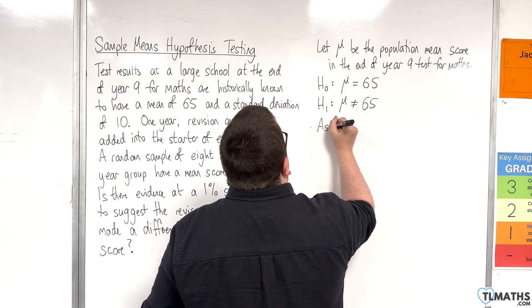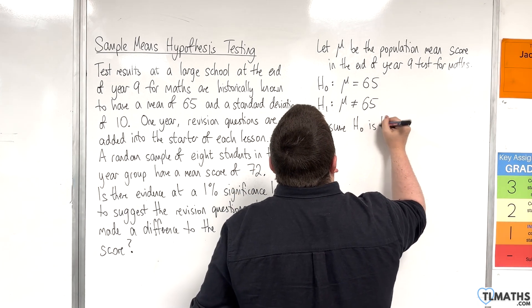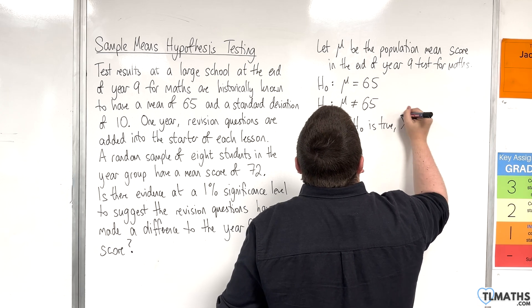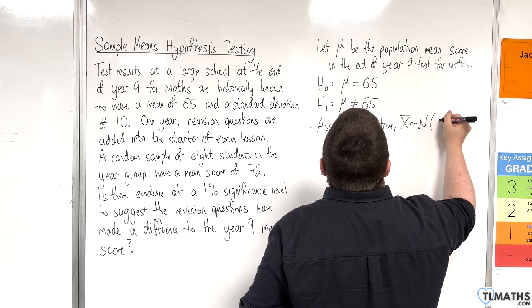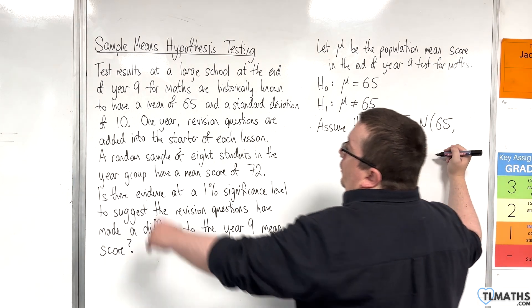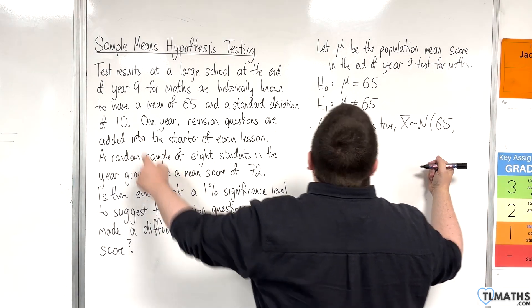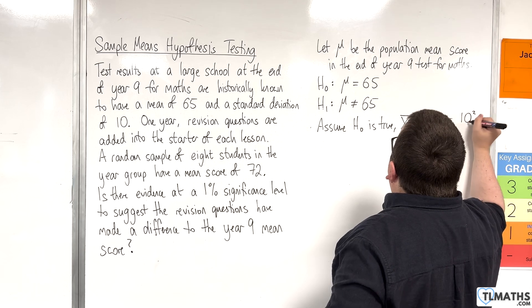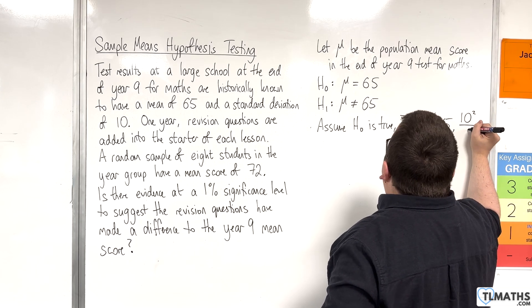So, if we assume H0 is true, then we're going to set up a normal distribution for the sample means, which has a mean of 65 and a variance of, well, the standard deviation there is 10, so 10 squared divided by the sample size, which is 8.